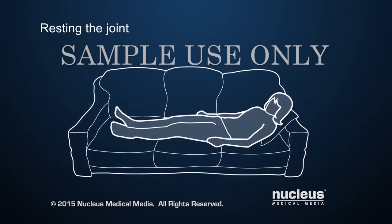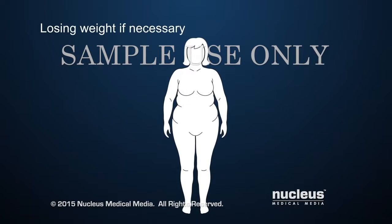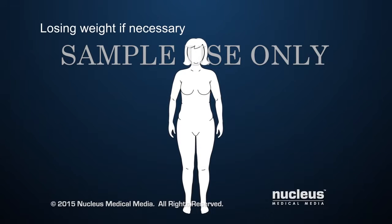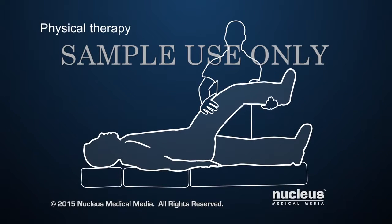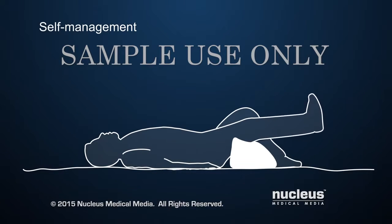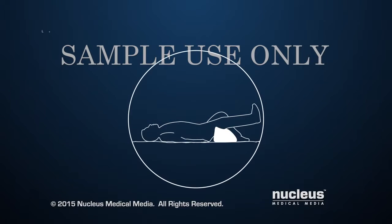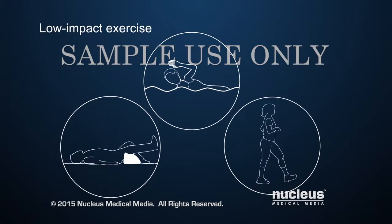Lifestyle changes, such as resting the affected joint and losing weight if necessary, may help slow down the progression of osteoarthritis. Other lifestyle changes include physical therapy exercises and education to manage osteoarthritis on your own. Physical therapy exercises, along with low-impact exercise such as walking and swimming, increase muscle strength and keep joints limber.